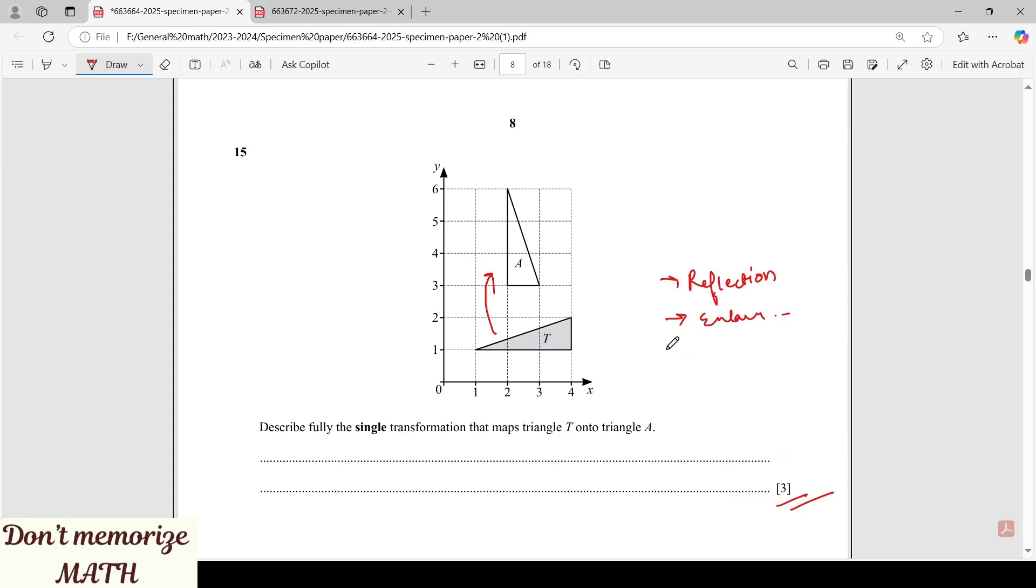Then we have rotation. For enlargement, you can see whenever one shape is bigger than the other or smaller than the other, the size of the shape is changing. This is not enlargement. Like that, one by one you can check and cancel it out.